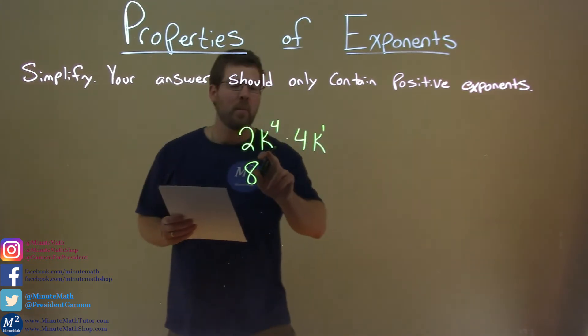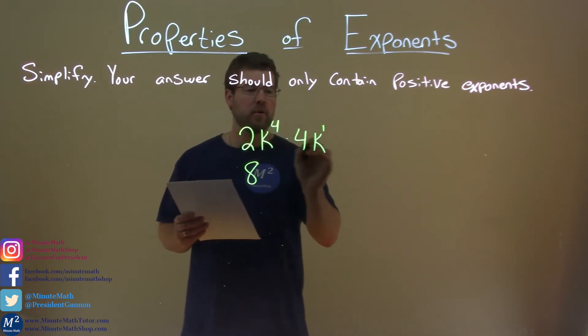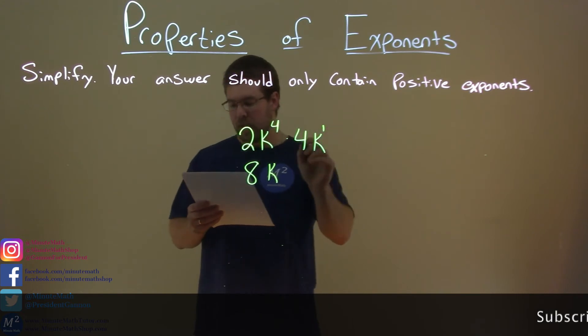Okay, so when we have the same base and they're being multiplied, we add the exponents. So, k to the fourth times k to the first is k to the 4 plus 1 which is 5.